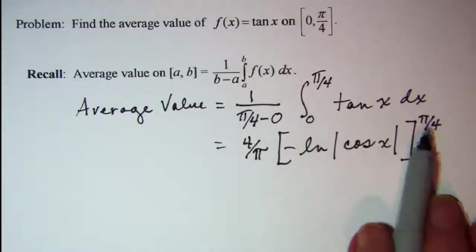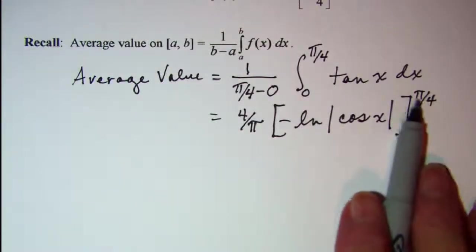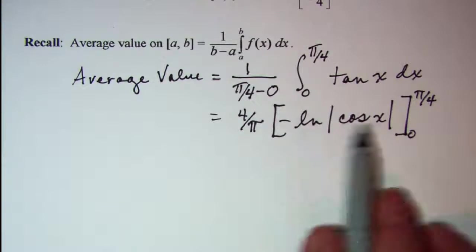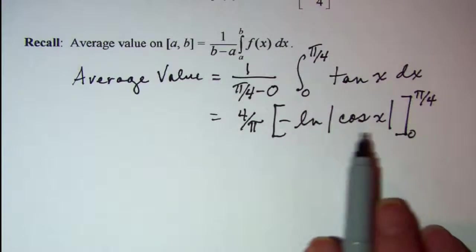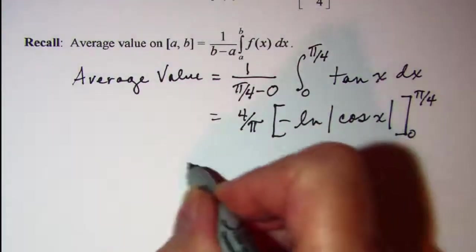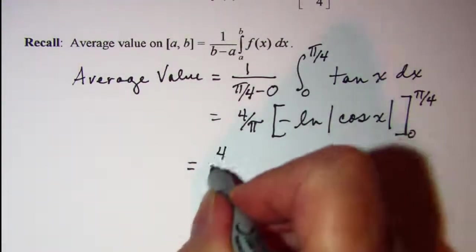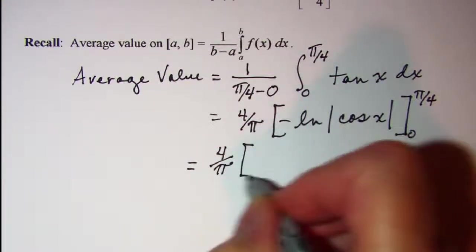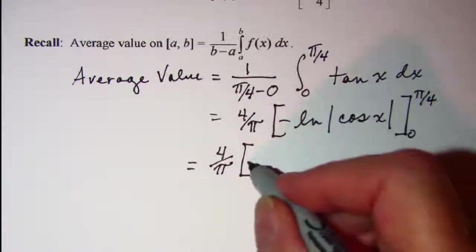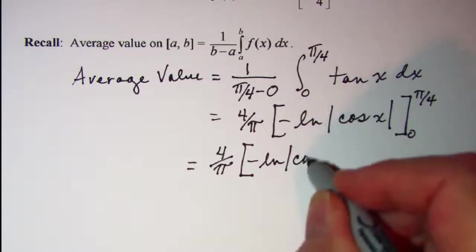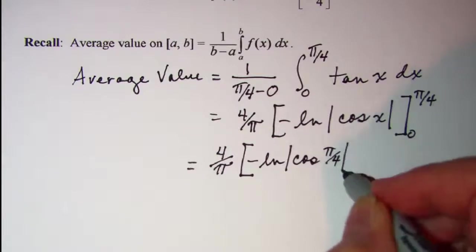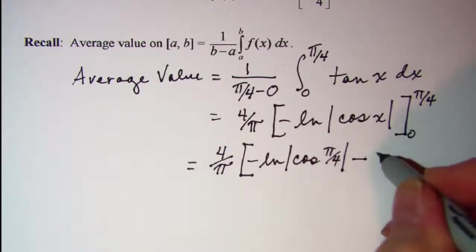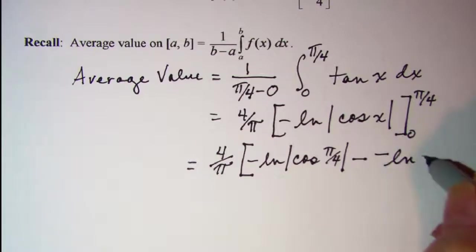Now our fundamental theorem of calculus says that we are going to evaluate this expression at pi over 4 and then subtract from that this expression evaluated at 0. So I have 4 over pi times negative ln absolute value of cosine pi over 4, subtract negative ln absolute value of cosine 0.